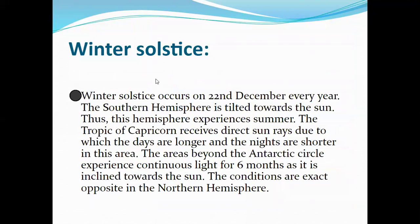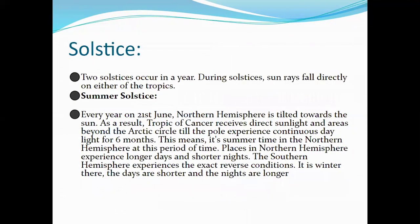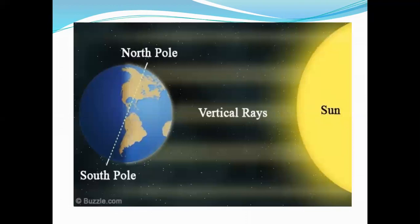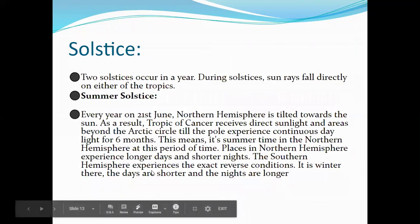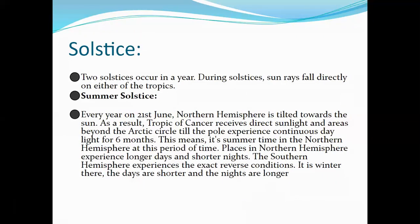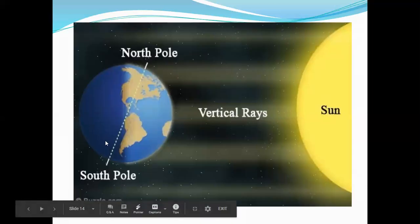The area beyond the Antarctic Circle experiences darkness. This means it is summer time in the northern hemisphere. At this time, the northern hemisphere experiences long days and short nights because summer is there. The southern hemisphere experiences the exact reverse condition — it is winter there, and the days are shorter and nights are longer in the southern hemisphere.